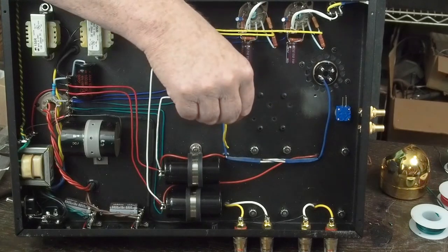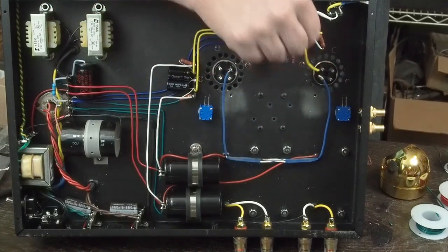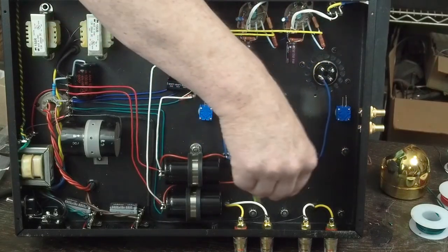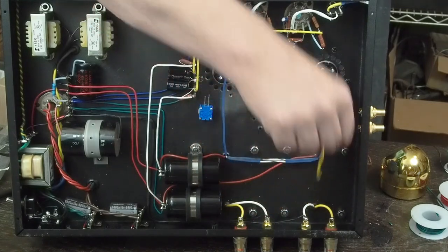We're going to be running the plate wires to the 300B for the transformer here and here. We've got the speaker jacks installed and wired up to the output transformers.